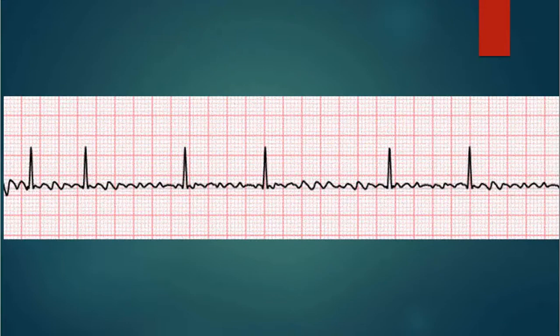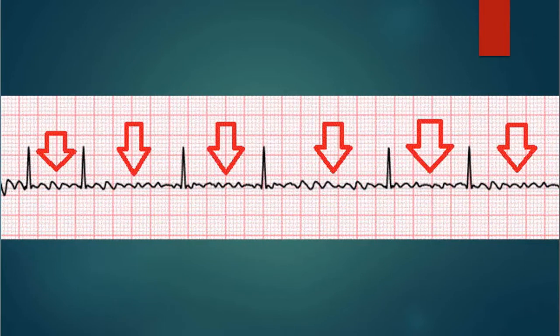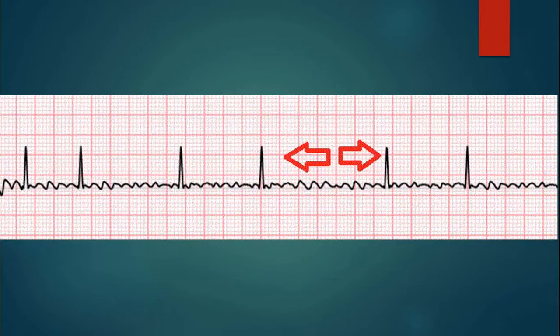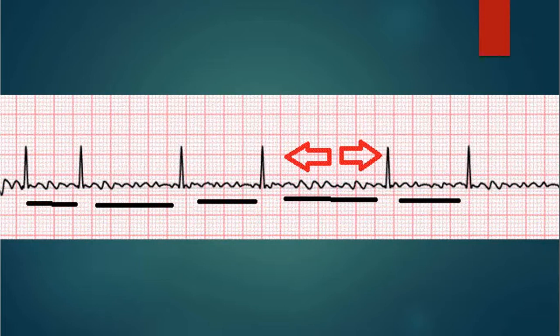Let's have a look at a textbook case of AFib. Here you can clearly see the fibrillation waves in between every complex. Pay particular attention to the length of time between each complex — notice how no two are the same and none of them follow any rhyme or reason. One old trick is to take your six-second strip or longer, fold it over, hold it up to the light, and line up two QRS complexes. If none of the others line up, you're looking at AFib — that's an irregularly irregular rhythm.